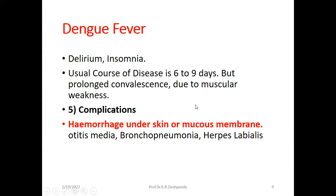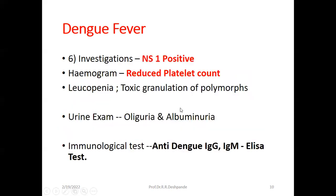These are the complications of Dengue fever, which is why we admit the patient. For investigations: NS1 blood test is positive. Hemogram shows reduced platelet count — normal is 2.5 to 4.5 lakhs per cubic mm, but it is reduced in Dengue. Because platelets — also called thrombocytes — are responsible for controlling bleeding, the reduced count causes hemorrhage.